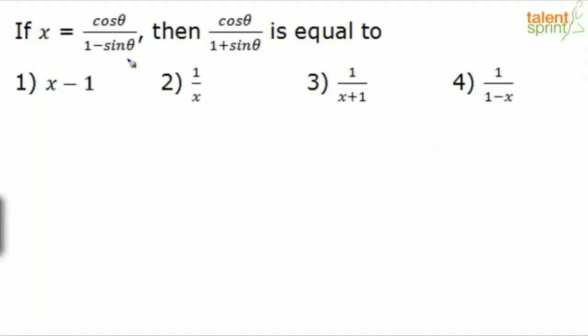If x equals cos theta divided by 1 minus sine theta, then what is cos theta divided by 1 plus sine theta? Now look at the options. All the options are in terms of x: x minus 1, 1 by x, 1 by x plus 1, and 1 by 1 minus x.